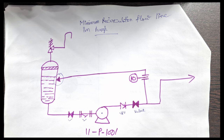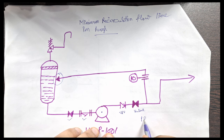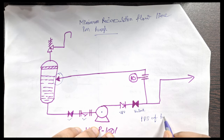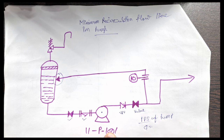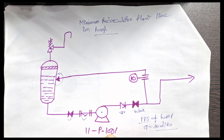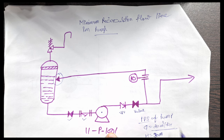So why have we provided this minimum recirculation line in the pump? When we prepare the PDS — the process data sheet — of the pump, we provide the flow rate. For example, let's suppose 20 cubic meters per hour is the normal flow rate we want from the pump, and the head is 30 meters.